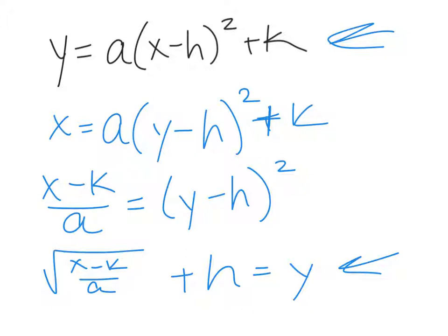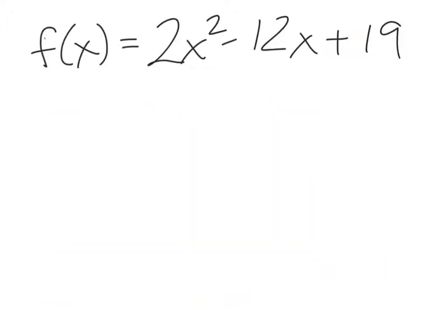It is a little more difficult, however, when you're given something in standard form for a quadratic and not in vertex form. So that's what I want to look at: how do we complete the square? Your options are either to complete the square before you switch x and y, or you can switch x and y and then complete the square. Either way, the goal is to solve for y once you've switched x and y.